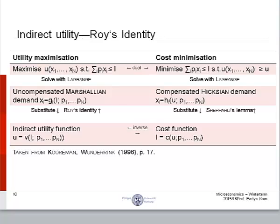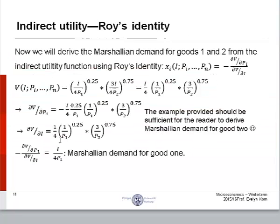To be sure of what we've done, in our table we are on the right side of the last row, right here, having just arrived at the indirect utility function. And now we will derive Marshallian demand for goods 1 and 2 from the indirect utility function using Roy's identity. Roy's identity is fairly simple. It simply states that the Marshallian demand for good x1 is the derivative of the indirect utility function with respect to price divided by the derivative with respect to income, and then multiplied by negative 1.